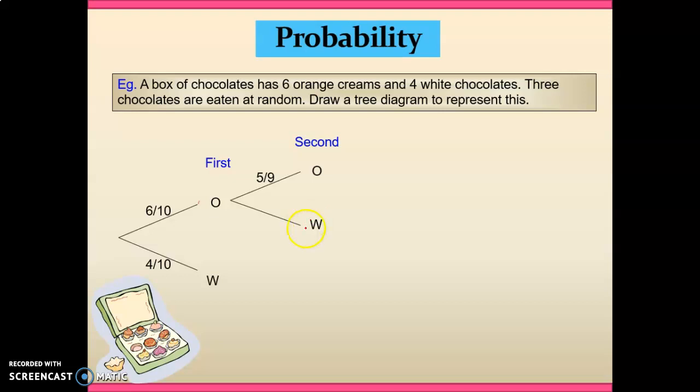Now looking at this one with the white chocolates, we haven't at this point eaten any of those if we presume we're following this pathway. So we've only got nine chocolates, but all four white chocolates remain. So we've got four out of nine there.